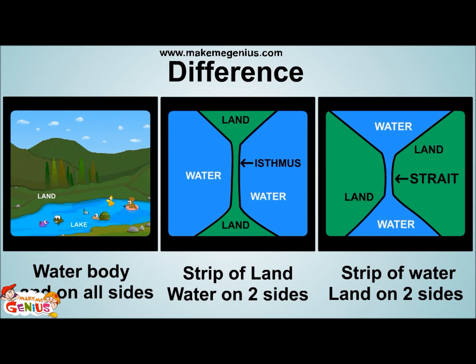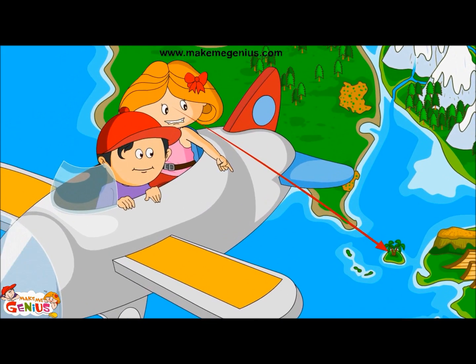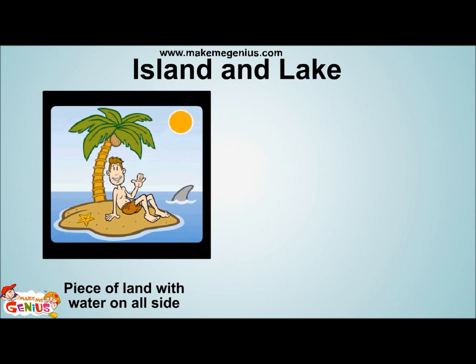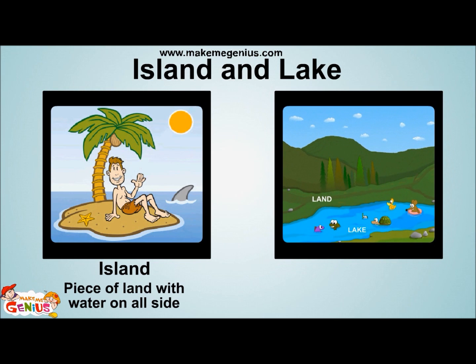You are really a genius. Now look at the next picture carefully. Can you tell me what this is? This is a piece of land surrounded by water from all sides. It is called an island. It is just the opposite of a lake. Look at this lake — a lake is a water body with land on all sides and an island is a piece of land with water all around it.